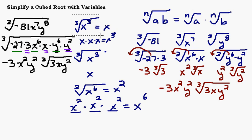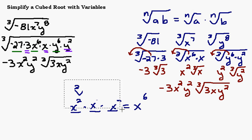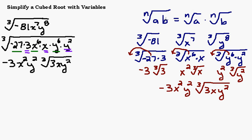So either way you do it — breaking it up into individual parts and doing them separately, or keeping them all together under the same radical — you should come up with the same answer. If the problem seems too big, breaking it down into smaller parts is a good approach. But once you get the feel of it, you can keep them all together. Notice these two answers are the same, so either method works.